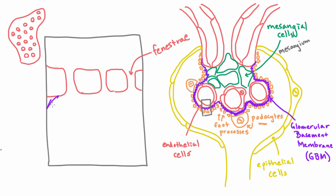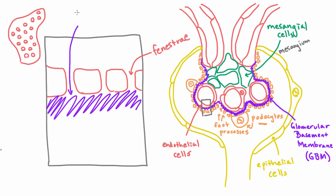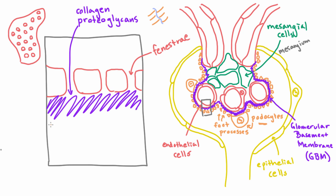The next layer is the GBM, which is mostly composed of collagen, which is a protein, and proteoglycans. Proteoglycans have a protein core, and then lots of little sugar chains coming off of that protein core. So you've got the proteo part — that's the protein — and the sugars coming off it, that's the glycan part.